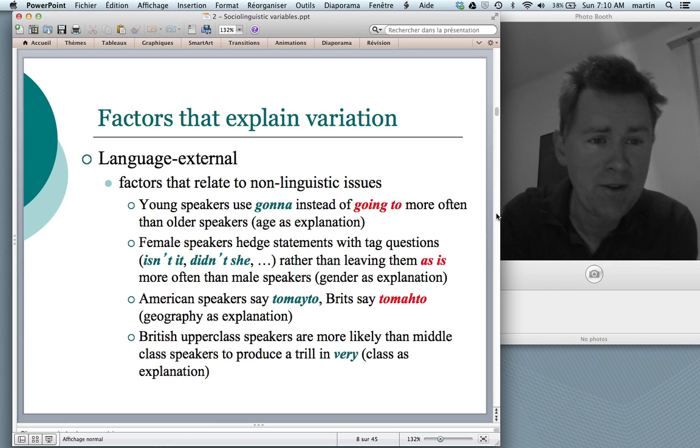I already talked about tomatoes and tomatoes. That is geography as an explanation. People in one area of the world do this, people in another area of the world do a different thing. Class, socioeconomic status, that is another variable that determines the choices that speakers make. So British upper-class speakers are more likely than middle-class speakers to produce a trill in words like very. So that would be something like very. I'm very concerned about. Those are language external factors, and sociolinguistics has been mostly concerned with these language external factors.